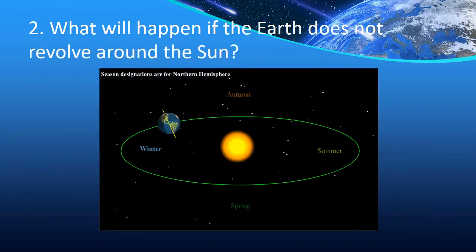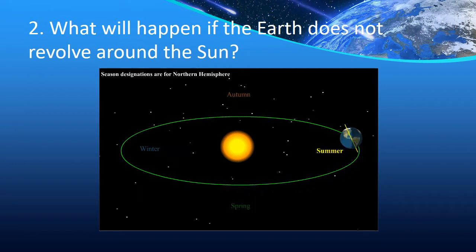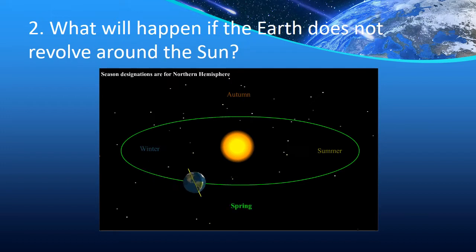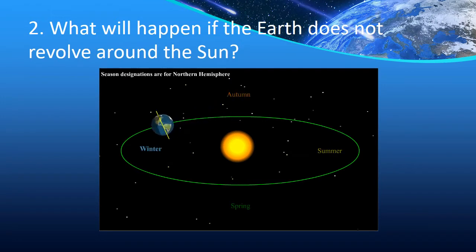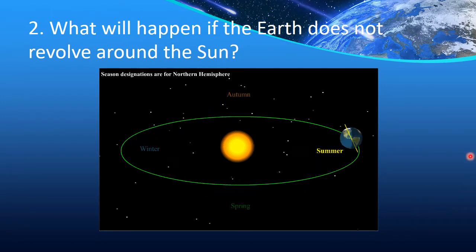Question 2: What will happen if the Earth does not revolve around the Sun? Now this is not a direct question — the concept is being checked. We know that because the Earth revolves around the Sun, we have the seasons: summer, autumn, winter, spring. And as the Earth rotates, we have day and night. So if the Earth stops revolving around the Sun, we will not have different seasons.